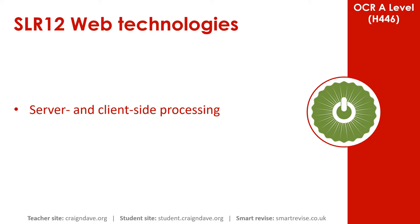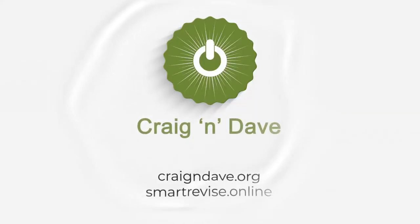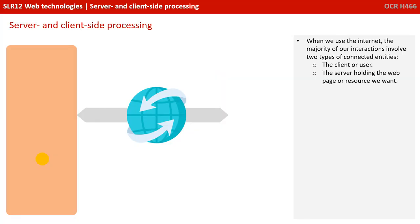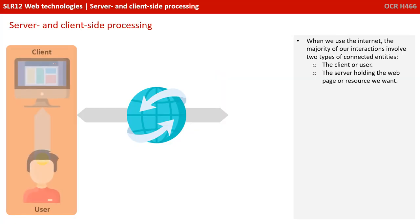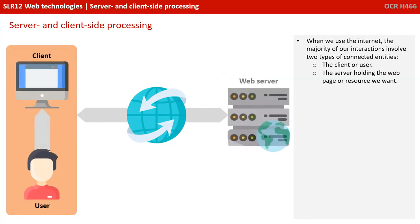In this video, we discuss server and client-side processing. When we use the internet, the majority of our interactions involve two types of connected entities: the client or user, and the server holding the web page or resource we want.